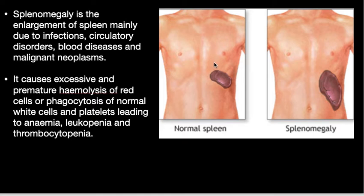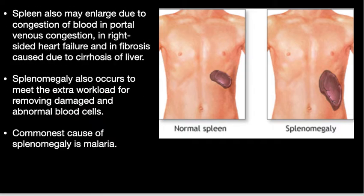Splenomegaly is the enlargement of the spleen, mainly due to infections, circulatory disorders, blood diseases, and malignant neoplasms. It causes excessive and premature hemolysis of red cells or phagocytosis of normal white cells and platelets, leading to anemia, leukopenia, and thrombocytopenia. The spleen may also enlarge due to congestion of blood in portal venous congestion, right-sided heart failure, and in fibrosis caused by cirrhosis of the liver.